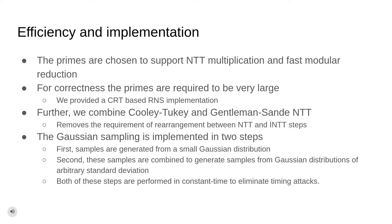We need to perform very large polynomial multiplications for our scheme. We choose our primes such that they support efficient polynomial multiplication using number theory transform and fast modular reduction. We also need large fields for correctness of our scheme. We split our large primes using the Chinese remainder theorem into smaller primes and perform individual multiplications using smaller primes, providing a full residual number system based implementation using CRT. As the length of our polynomials can be very large, the rearrangement steps after NTT or inverse NTT can be very costly.